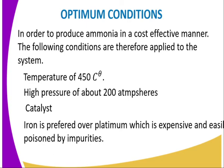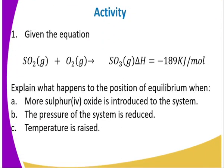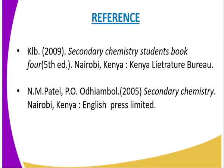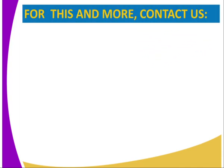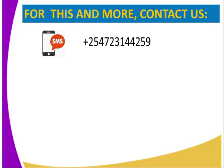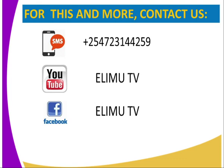Let's see whether we have understood the concept by answering the following question: Given the equation SO₂ + O₂ ⇌ SO₃, what happens to the position of equilibrium when: more SO₂ is introduced to the system; the pressure of the system is reduced; and the temperature is raised? You can apply the same concept with reference to the Haber Process as explained. You can refer to student chemistry books 3 and 4, as well as Patel. You can also reach us via SMS, or visit us on Facebook and YouTube at Elimu TV, or Twitter at Elimu TV underscore KE. I'm your tutor Mr. Mwangi — thank you.